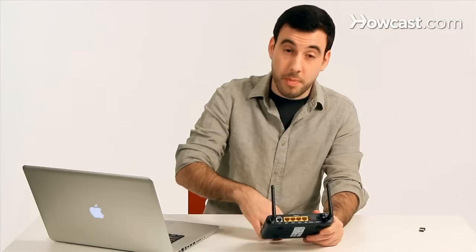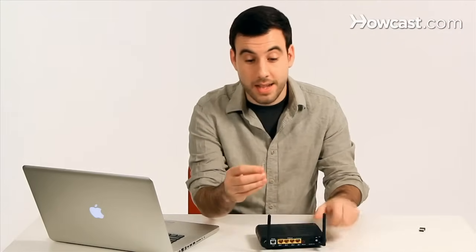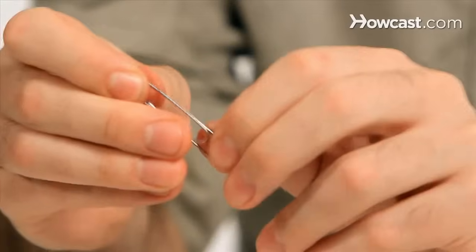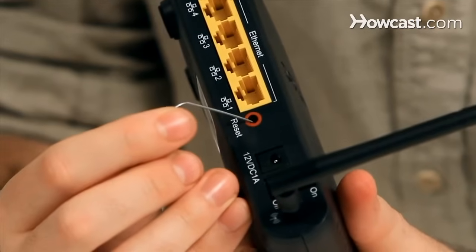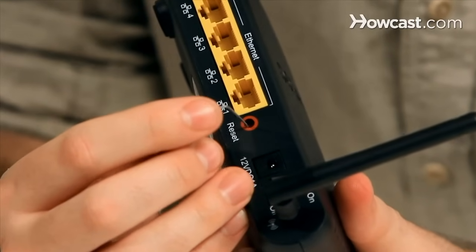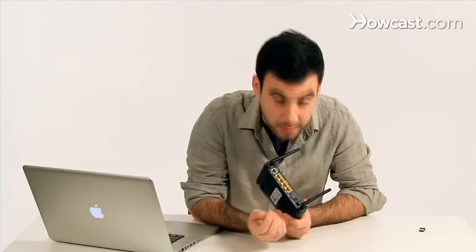Another way is by using this rare and handy tool called a paperclip. I can unfold it a little bit to get the sharp point out and sometimes there will be a little reset switch right here that I can just click and that will reset the router.